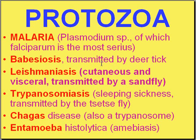Babesiosis is transmitted by a deer tick, not a mosquito like malaria, but it has remarkable similarities to malaria both morphologically and clinically. The big difference is it's very, very rare in humans. There is another protozoal disease involving both cutaneous and visceral forms — leishmaniasis. Like the other two, there's a vector; in this case it's a sand fly, and it causes a wide variety of diseases involving the skin and the more serious ones in the viscera.